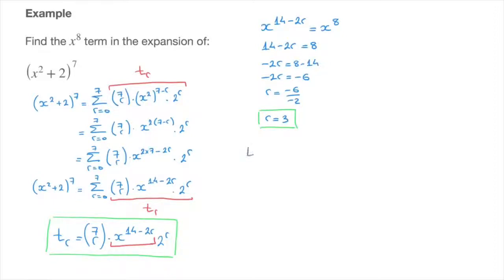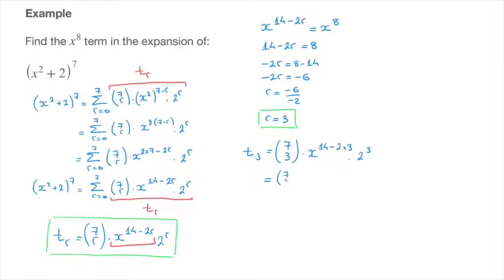Substituting r equals 3, t3 equals the binomial coefficient 7, 3 times x to the power of 14 minus 2 times 3, multiplied by 2 to the power of 3. All I've done is copy the general term and replace every instance of r by 3. Simplifying, this equals the binomial coefficient 7, 3 times x to the power of 14 minus 6, times 2 to the power of 3, which is 8. That's the binomial coefficient 7, 3 times x to the power of 8, times 8.